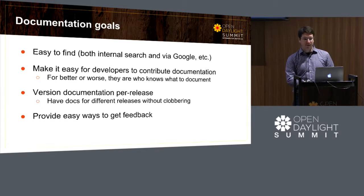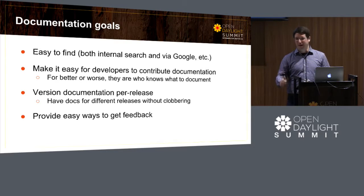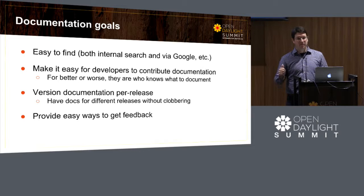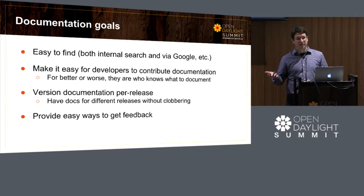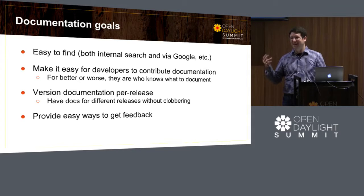My goals: first, easy to find — I think we've done that. Second, make it really easy for developers to contribute. For better or worse, developers are who we've got. If you can't streamline it so they can document things when they write the code, it's not going to happen. The only two ways I've seen documentation produced in open source are: users write it themselves — that's effectively what happened with OpenStack, but it took a long time and it's still not great — or the developers write it.